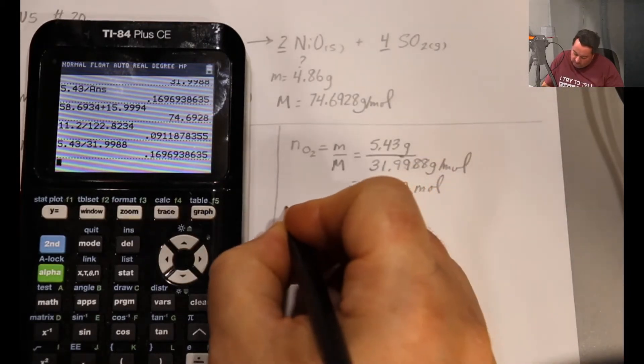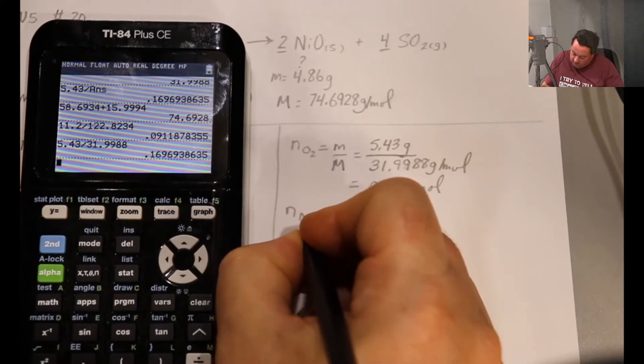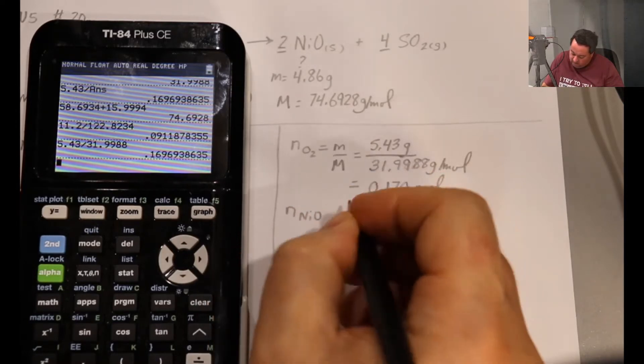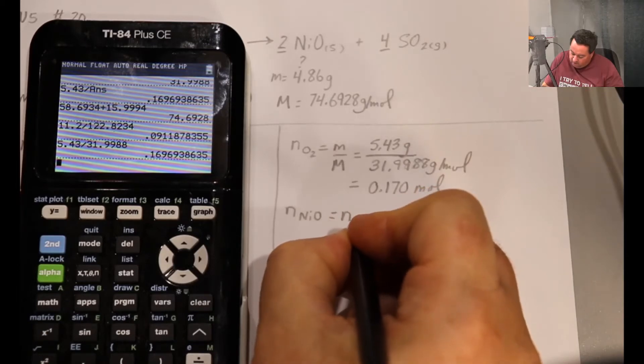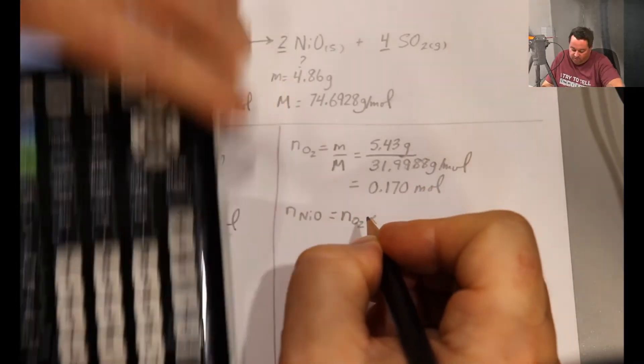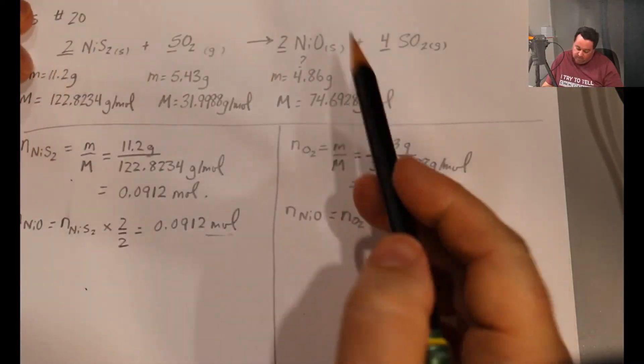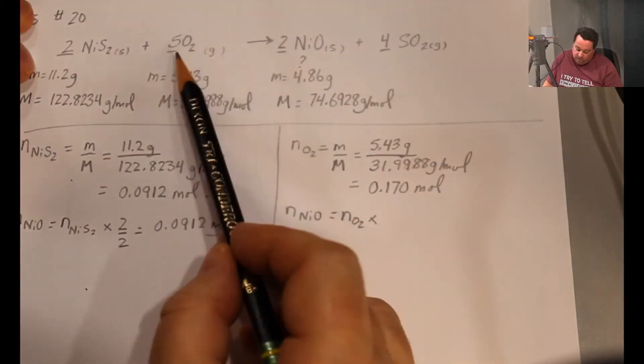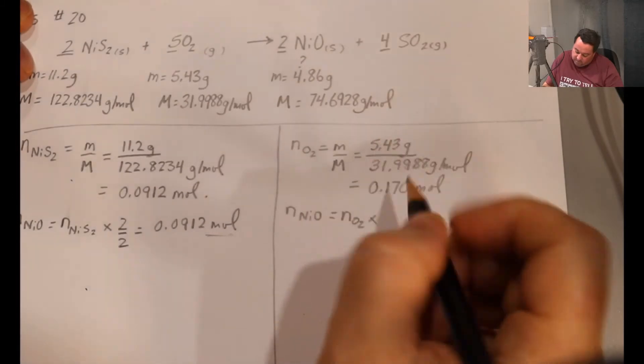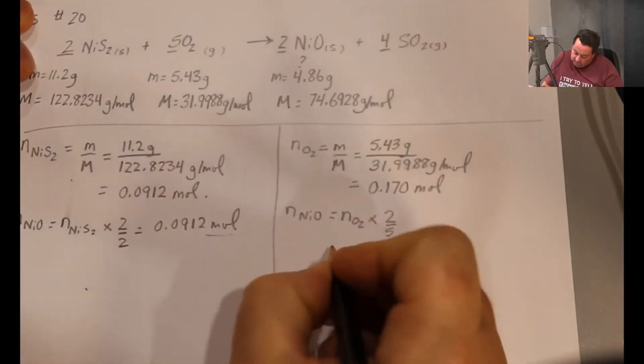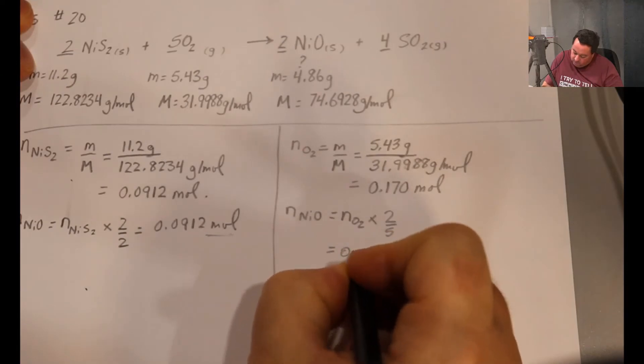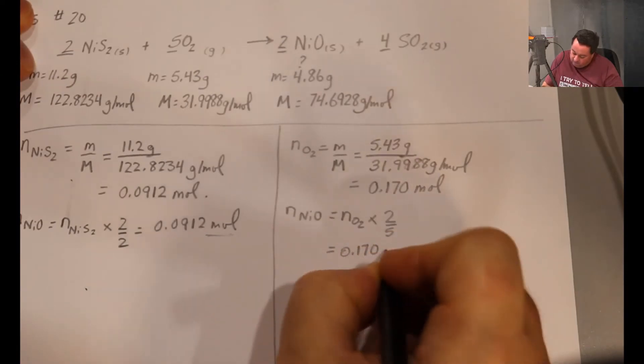And then the number of moles of NiO that we can make from this will be the number of moles of O2 times the mole ratio for this substance, so required over given, two over five. So 0.170 moles.